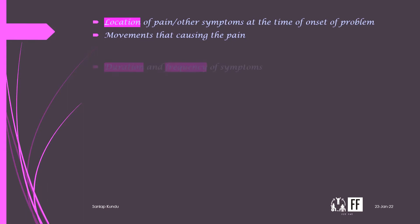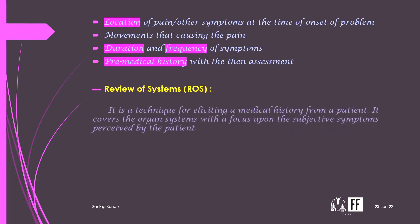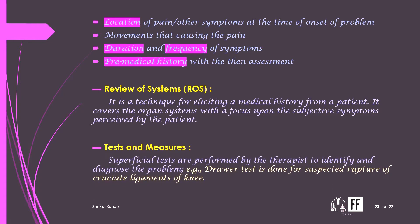History content also includes movements causing or aggravating the pain, duration and frequency of symptoms, and past medical history. The review of systems is a technique for eliciting medical history covering organ systems with a focus on subjective symptoms perceived by the patient. Tests and measures are then performed by the therapist to identify and diagnose the problem — for example, the drawer test is done for suspected rupture of the cruciate ligament of the knee.